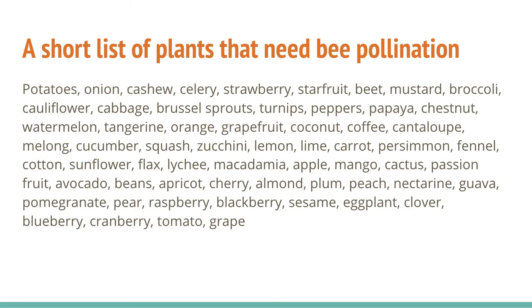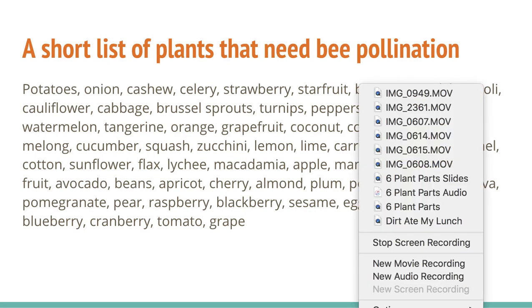I wanted to cap this lesson off by giving you a short list of plants that need bee pollination. The magnitude of how important bees are wasn't really brought home for me until I saw the massive list of plants that are mainly pollinated by bees. If you had an orange and grapefruit salad with coffee for breakfast, that's all on this list. Potatoes, lots of our fruits, lots of our nuts — all of these things important to everyday life would basically be gone without bees. We really need to put our best foot forward into protecting our bee species. Please come back next time — our next lesson is about composting and the nutrient cycle. Thank you.